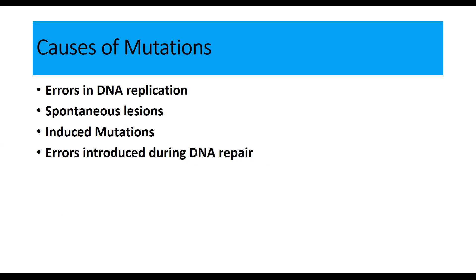There are basically four major categories or mechanisms that give rise to mutations. One of them is errors in DNA during the process of replication. Second is spontaneous lesions which arise in the DNA sequence. Third is induced mutations, these mutations are induced by some mutagens present in the environment. And the last one is errors introduced in DNA repair. When DNA is repaired from mutations, sometimes mutations can be inserted during this process.